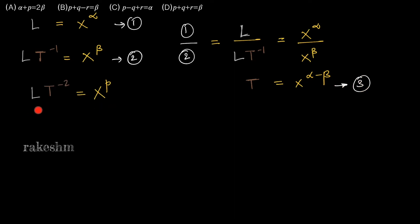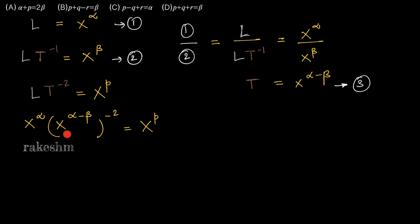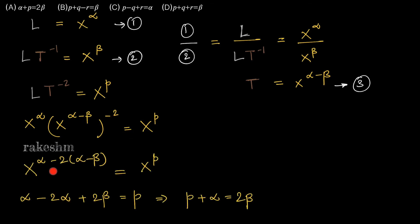We are given acceleration equals x power p, or L T power minus two equal to x power p. Substituting L as x power alpha from equation 1, and T as x power alpha minus beta, we write x power alpha times x power alpha minus beta whole power minus two equals x power p. Equating the powers on LHS and RHS and simplifying, we get p plus alpha equals 2 beta. So the first option, p plus alpha equals 2 beta, is correct.